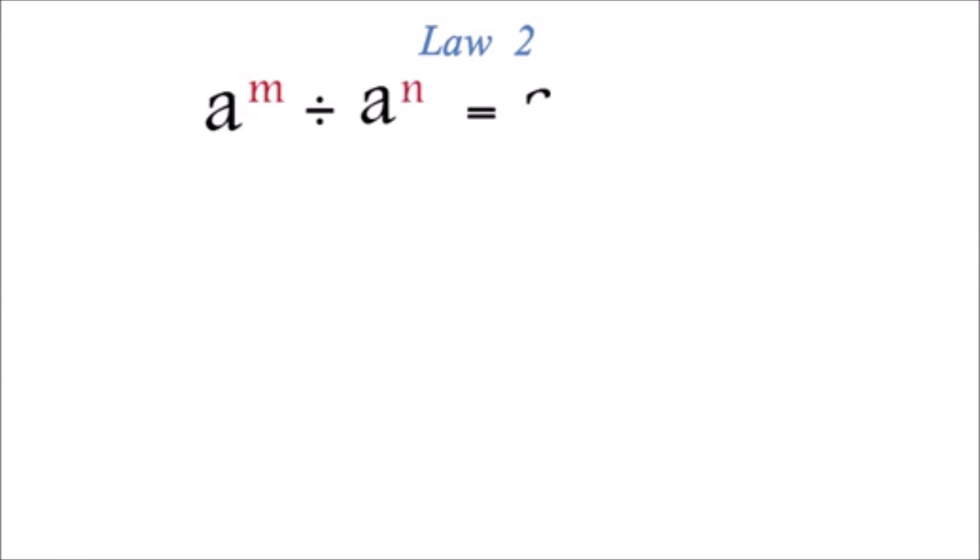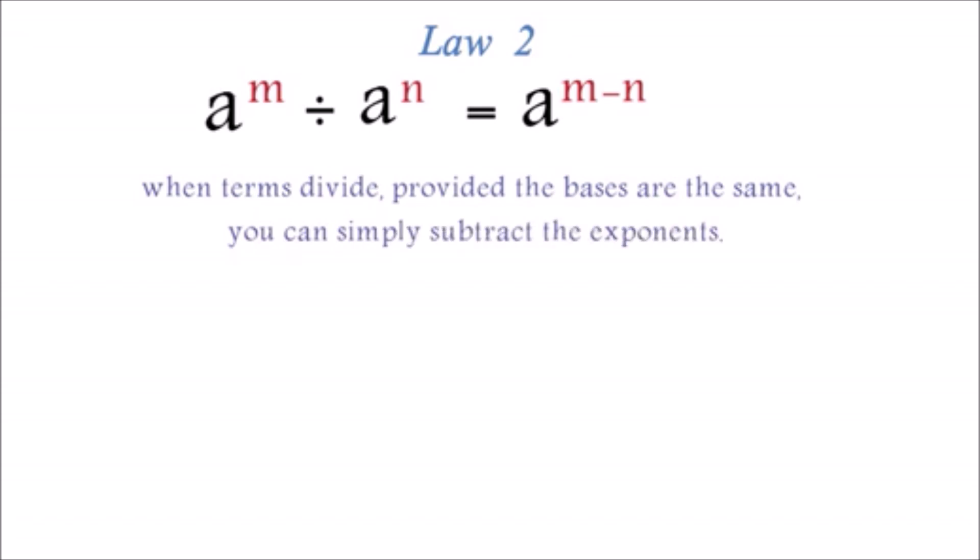Law 2: The second law of exponents states that a exponent m divided by a exponent n equals a exponent m minus n. For the second law, we say that when terms divide, provided the bases are the same, you can simply subtract the exponents.